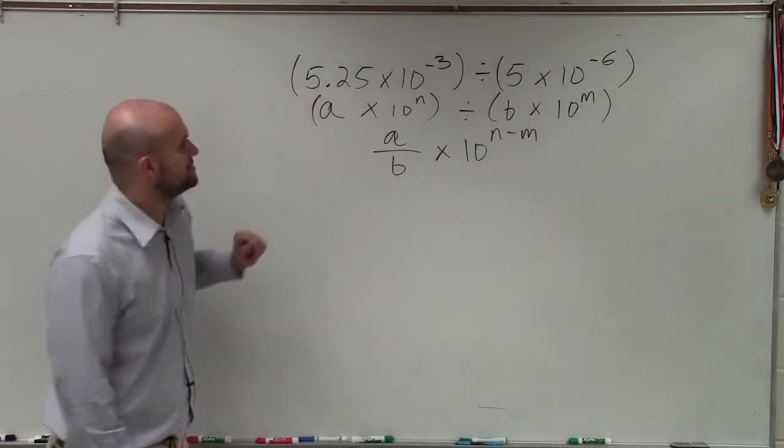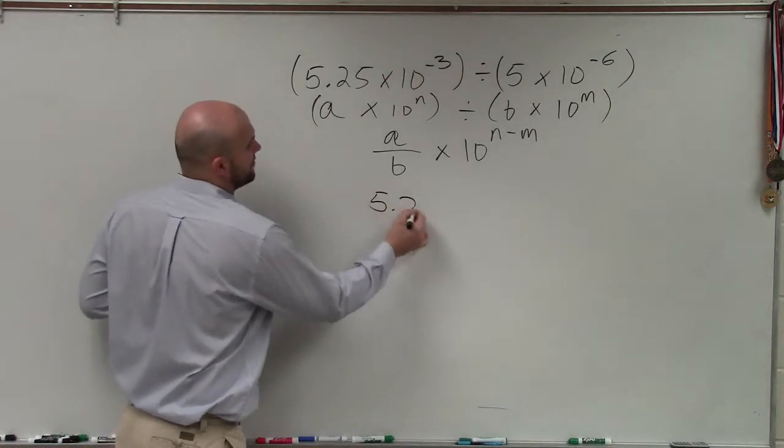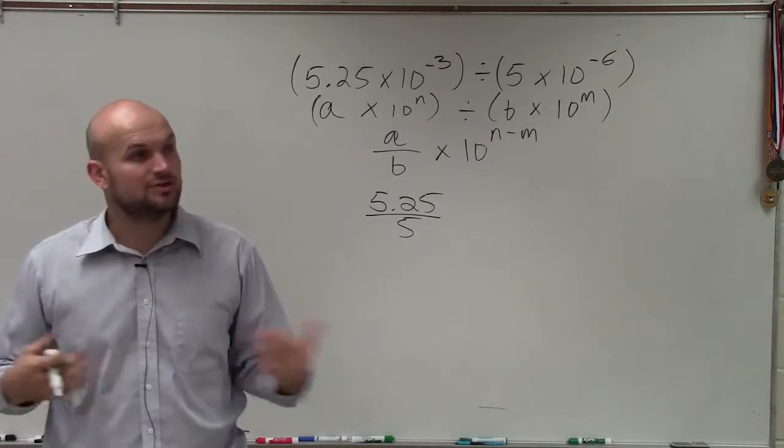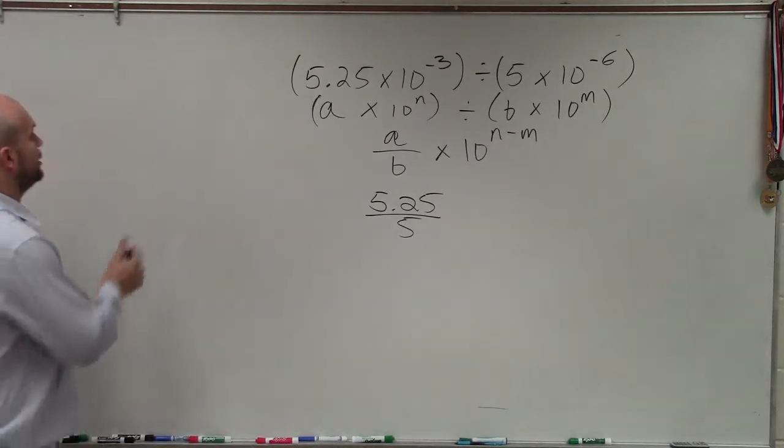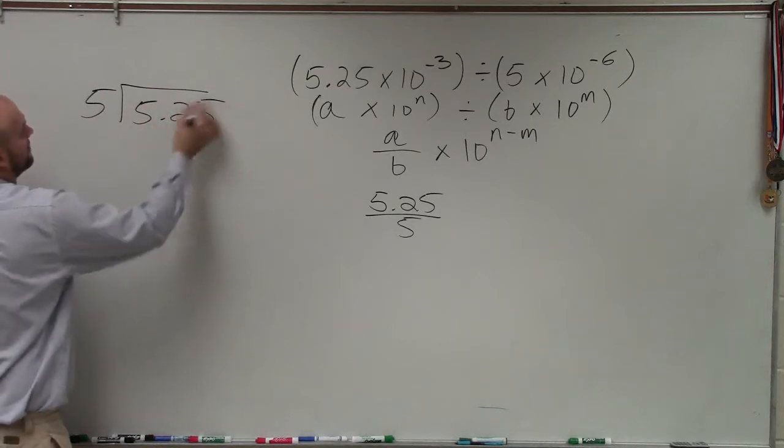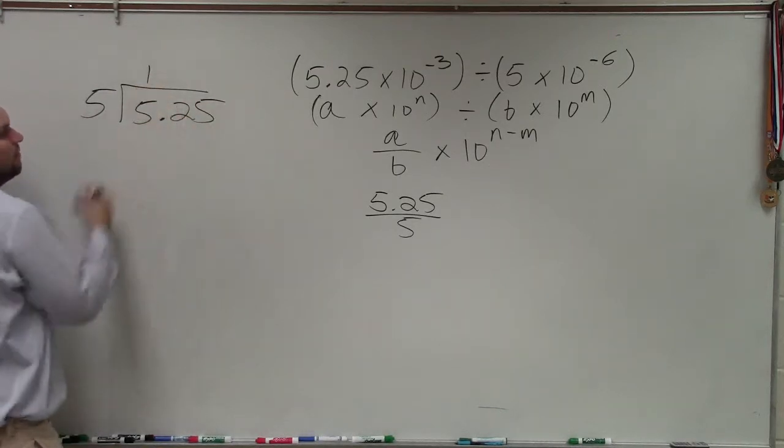So basically what we need to do is take 5.25 and divide it by 5. To do that, we're going to use long division. 5 divides into 5.25. Well, 5 goes into 5 one time.